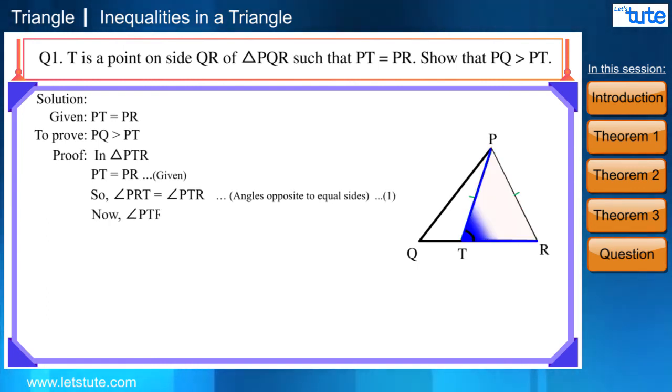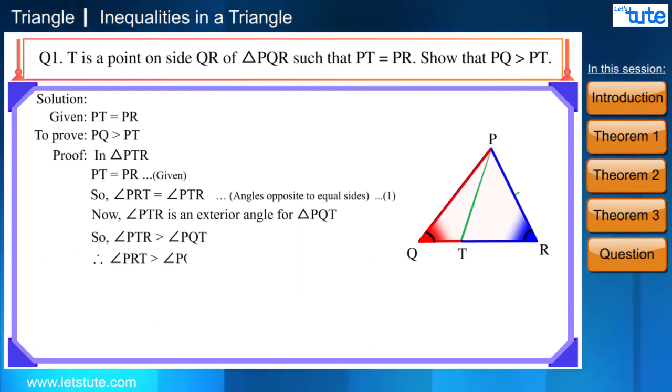Now, angle PTR is an exterior angle for triangle PQT. So, angle PTR is greater than angle PQT. Therefore, angle PRT is greater than angle PQT. From equation number 1.